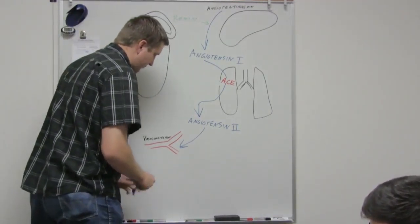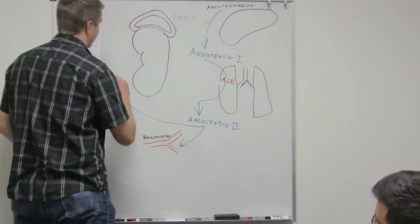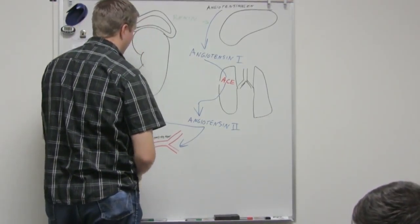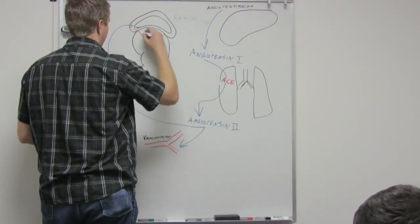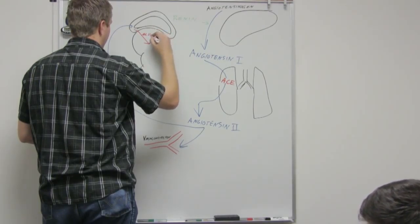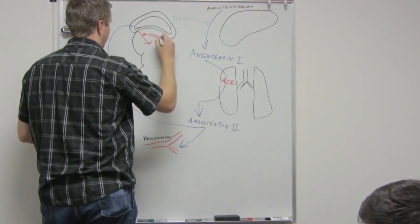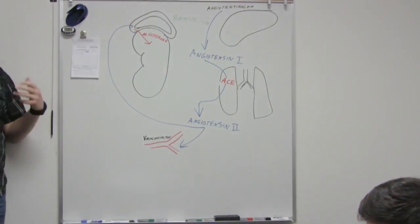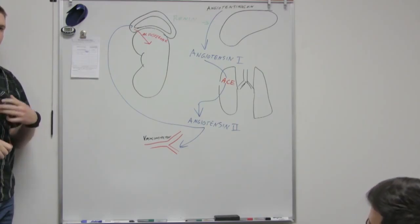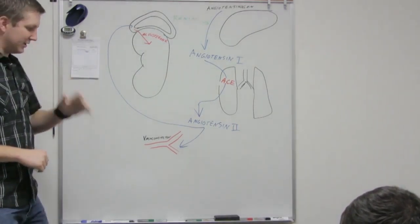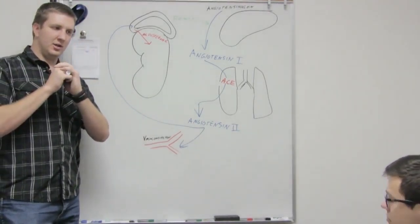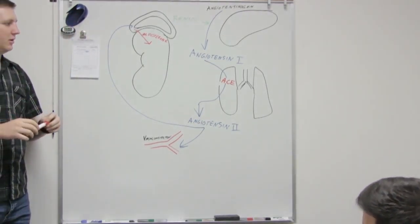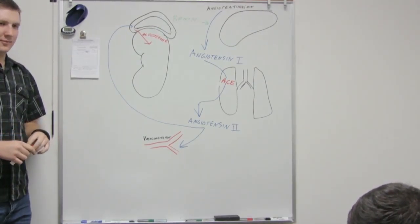It also tells the adrenal cortex to release aldosterone. Aldosterone tells the kidneys to reabsorb more sodium, which then makes them reabsorb more water. So really what we're doing is we're constricting the blood vessels, so we're making our container smaller, and we're also forcing more water into that smaller container, so we increase our blood pressure that way. That all making sense?